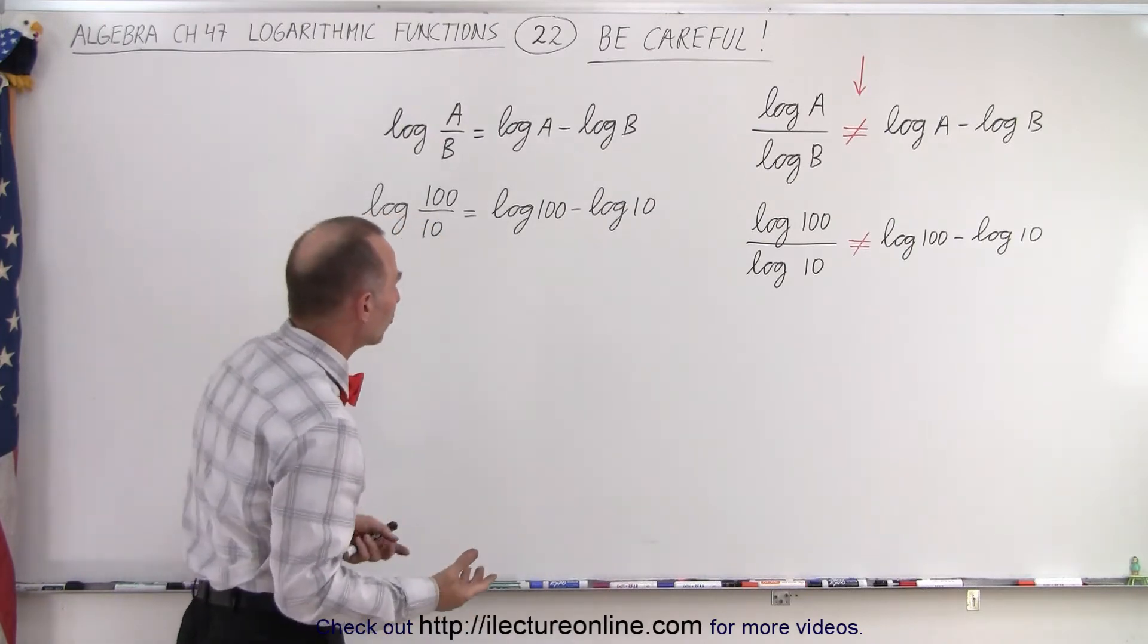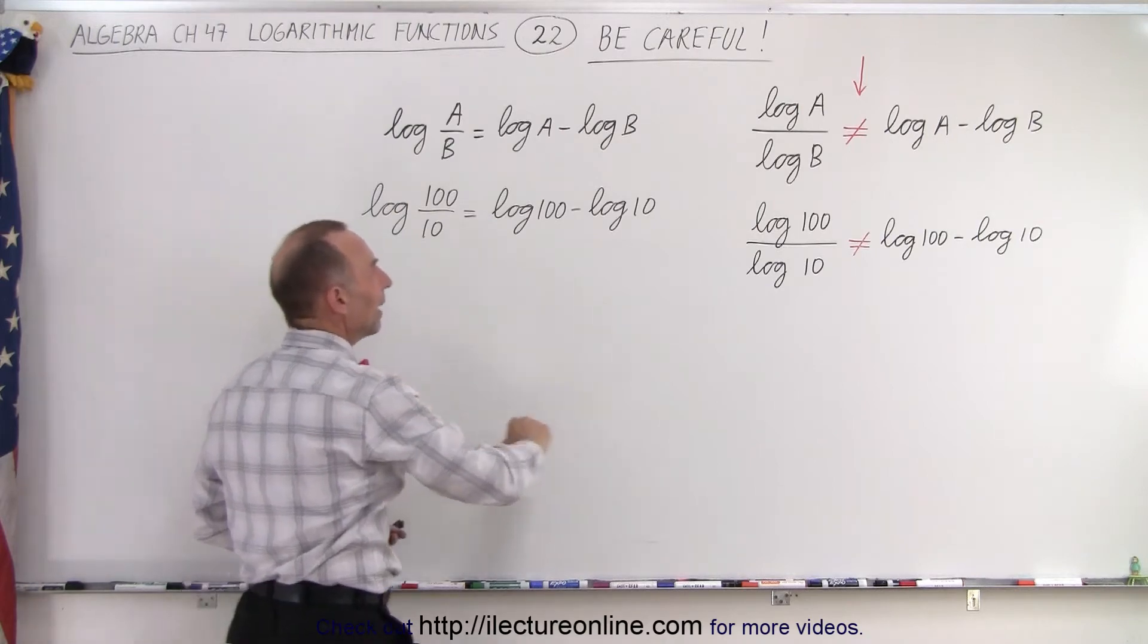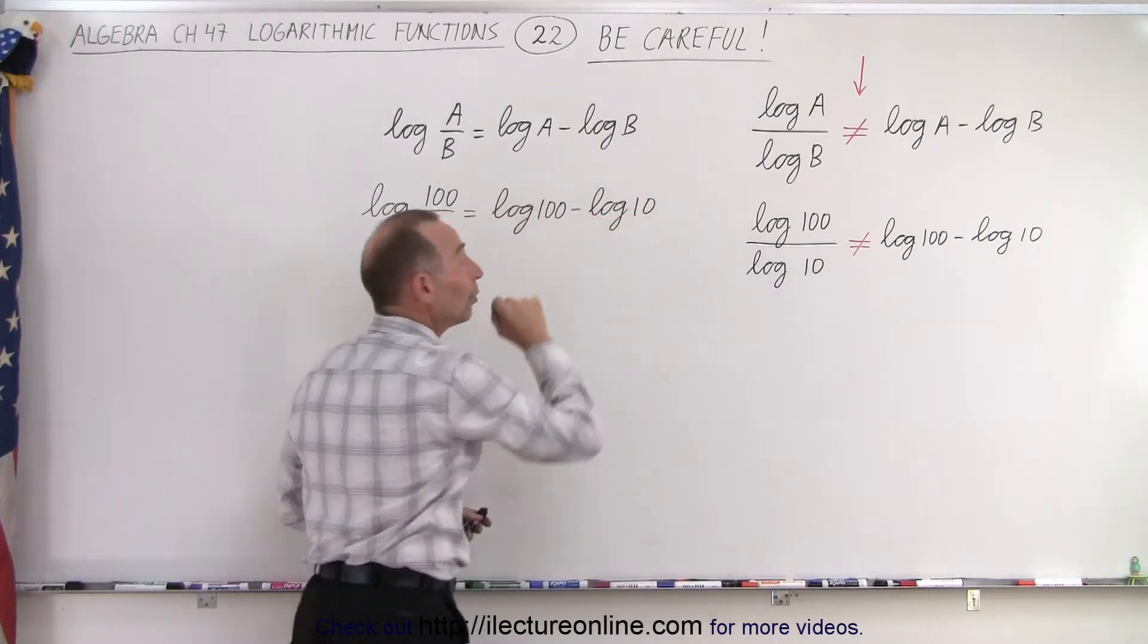To show you that through an illustration let's try this: the log of 100 divided by 10 and the log of 100 divided by the log of 10. This is not going to be equal, this will be equal.